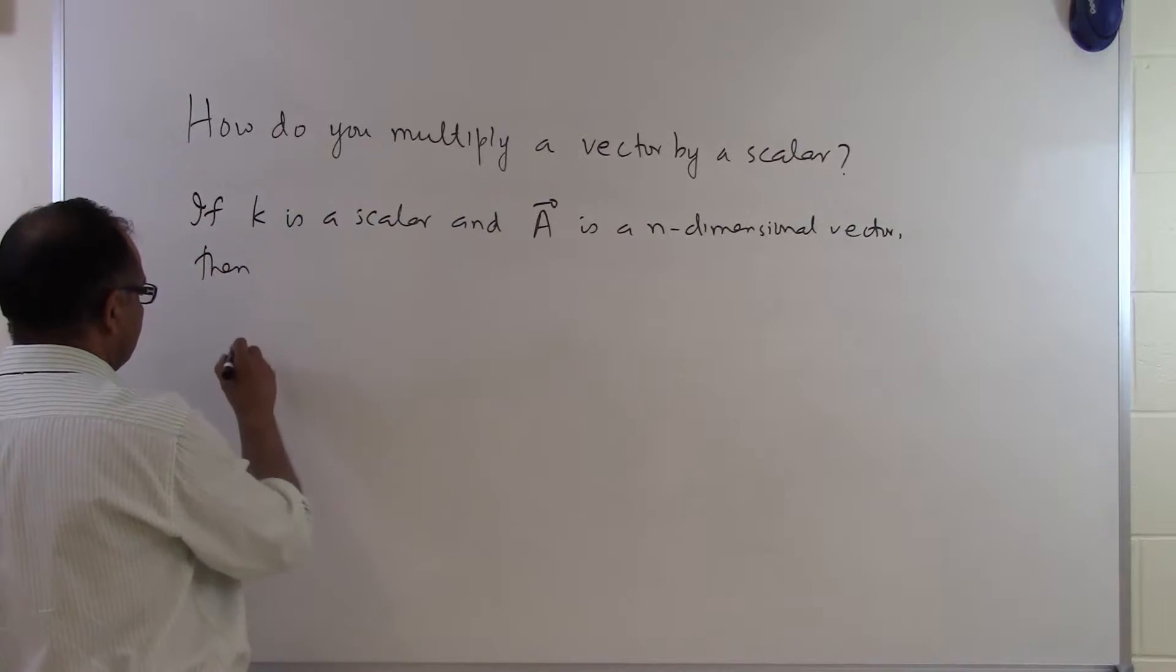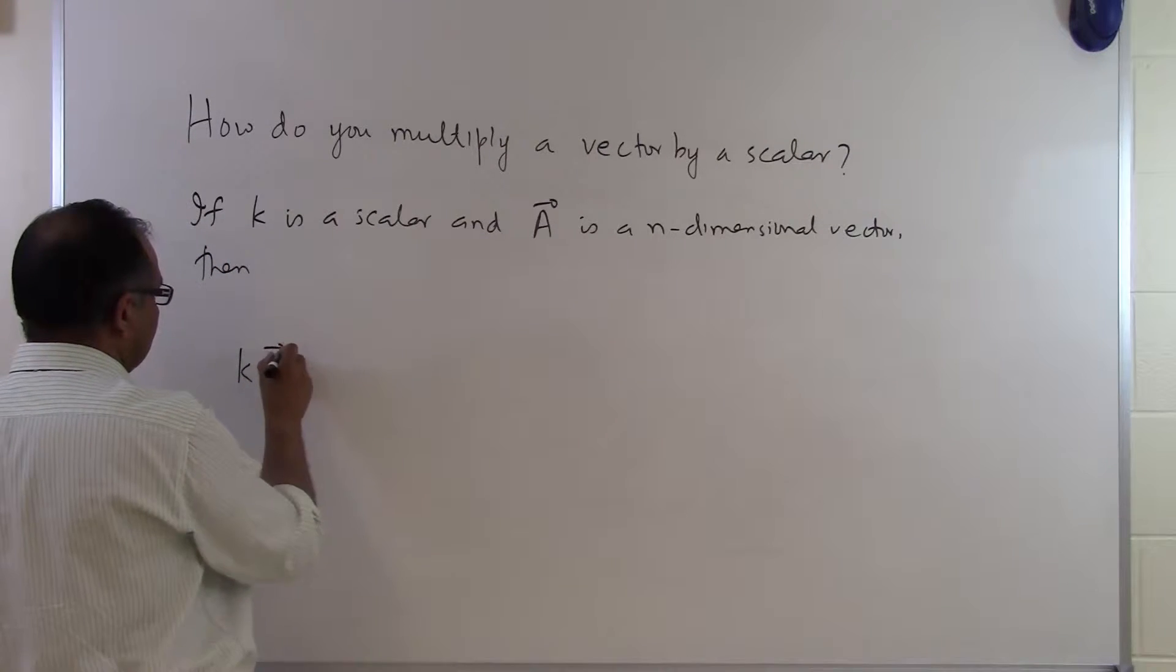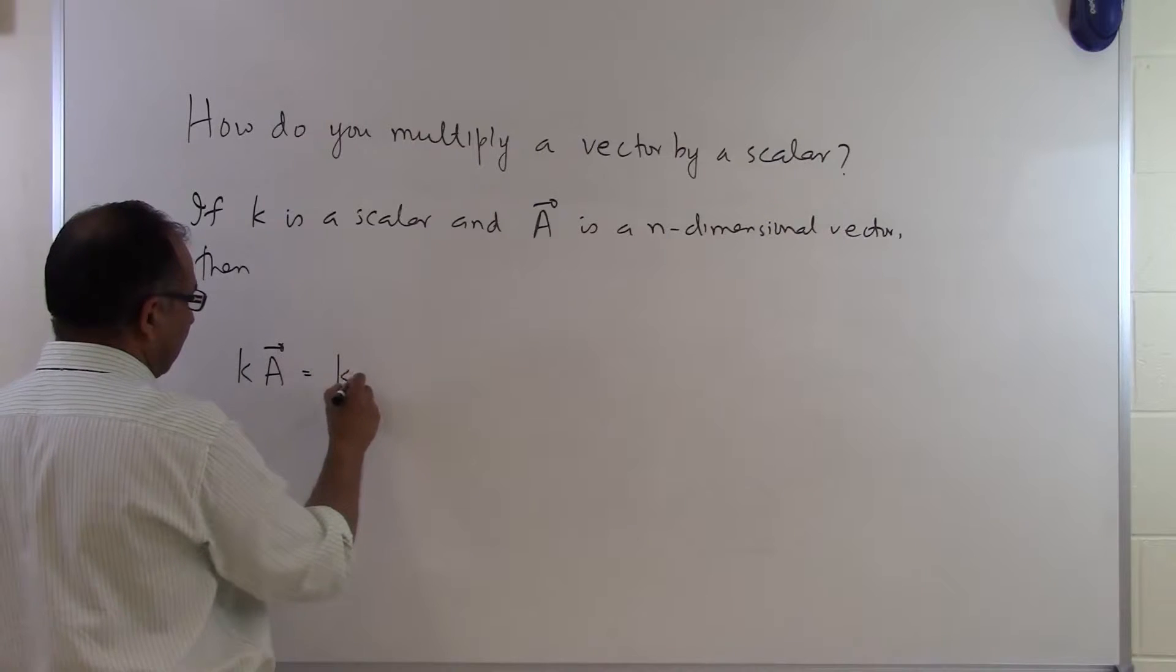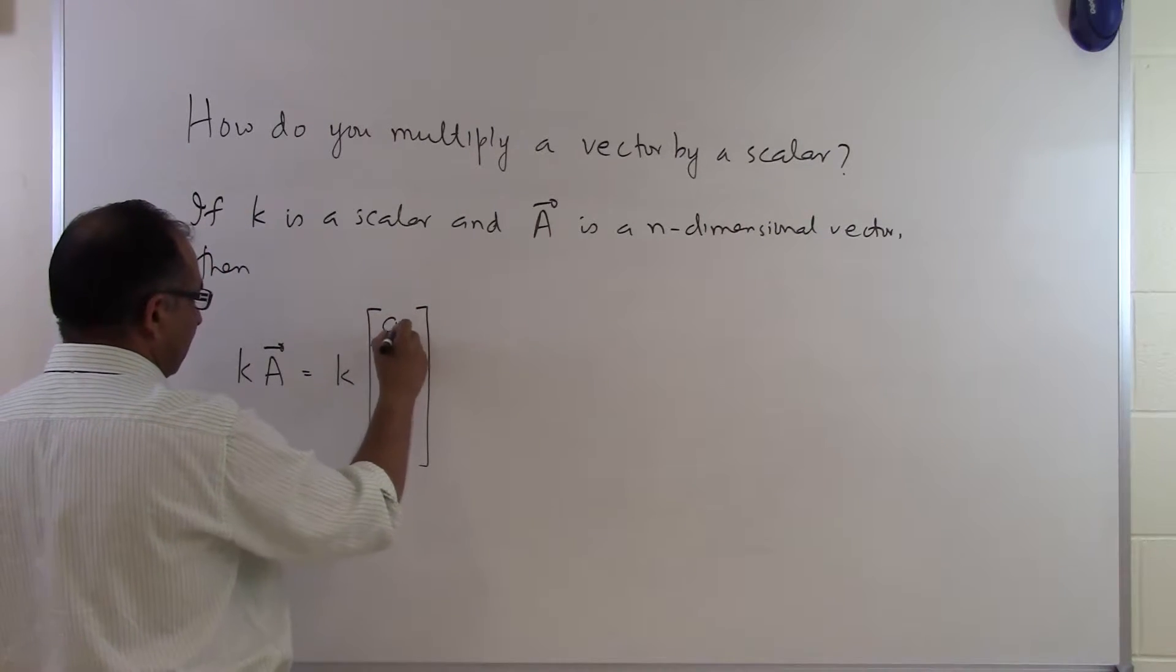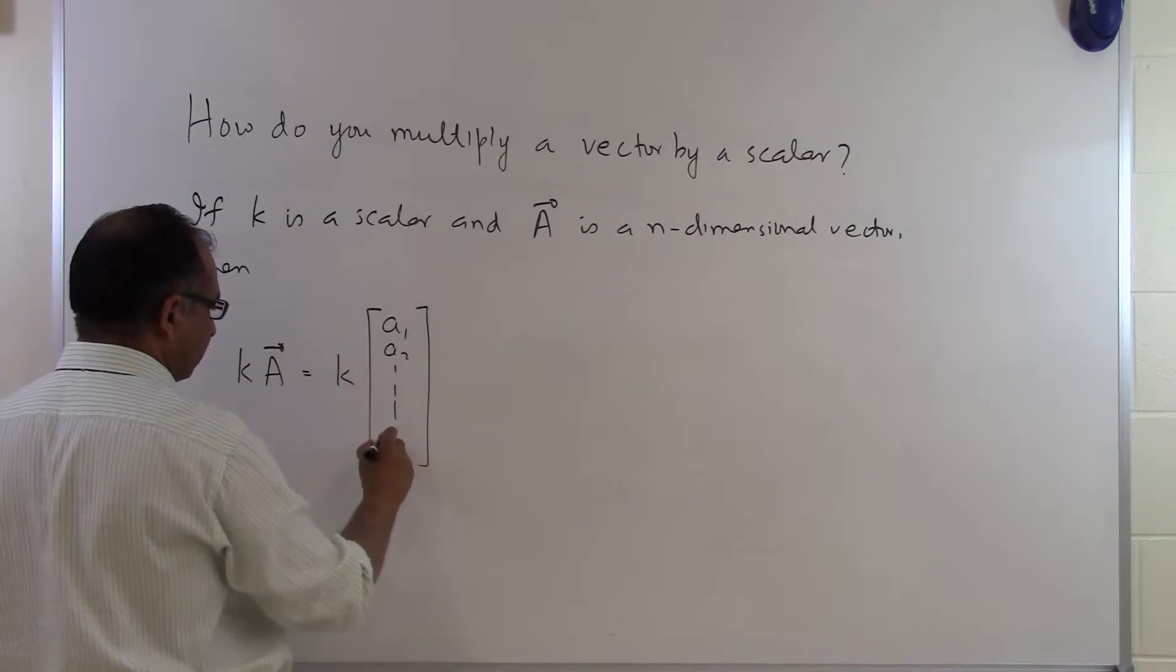...we write k times A, and this will equal k times whatever the A vector is. Let's suppose the A vector has components a₁, a₂, all the way up to a_n.